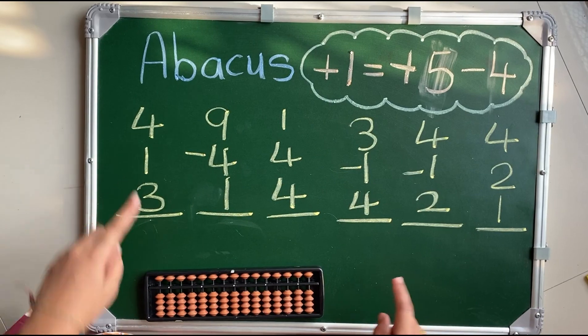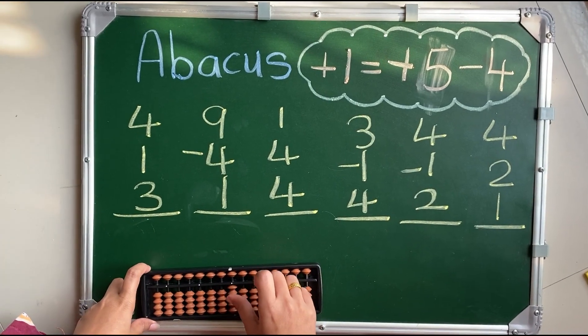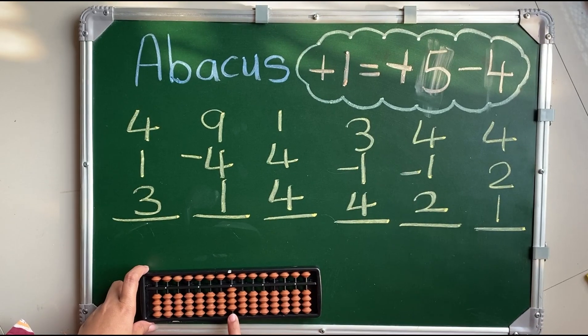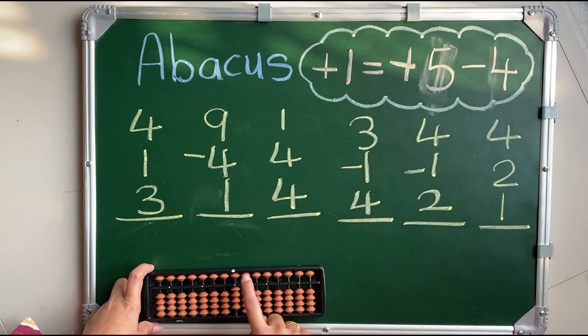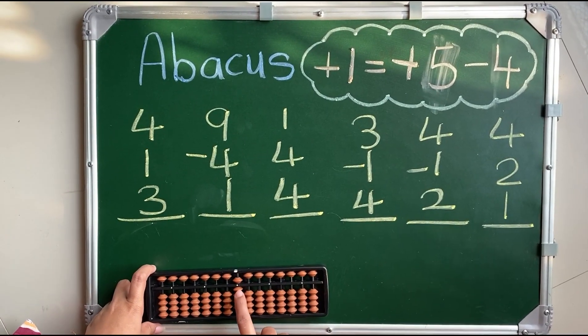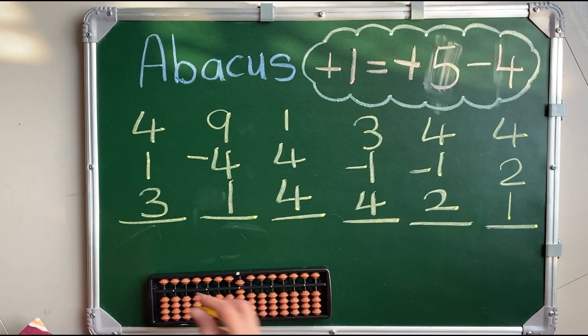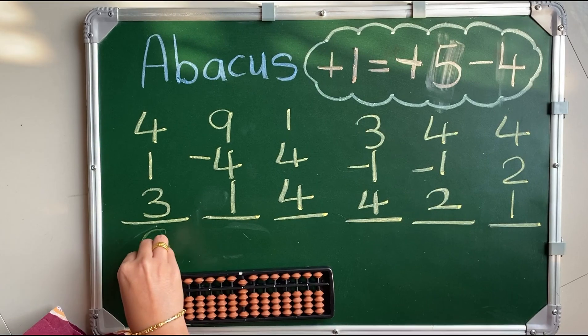Let's see the first sum. 4, 1, 2, 3, 4 plus 1. So, I don't have enough bits. I will use small friend concept that is plus 5 minus 3. The answer is 8.